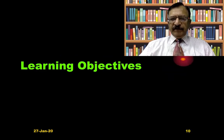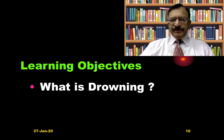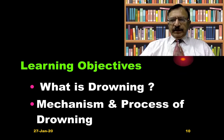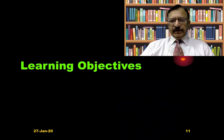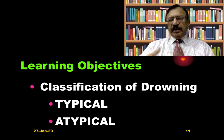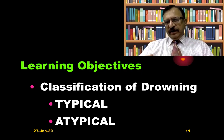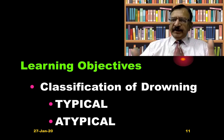The learning objectives of this lecture will be: defining what is drowning, what actually happens in drowning, and what is the mechanism and process of drowning. Then, what are the various types — that is the classification — the typical and the non-typical or atypical.